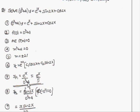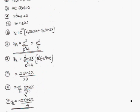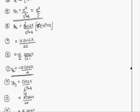For yp1: yp1 = eˣ/(D² + 4). In the eˣ model, the coefficient of x is 1, so substitute D = 1: 1² + 4 = 5. Since the denominator is not zero, yp1 = eˣ/5.